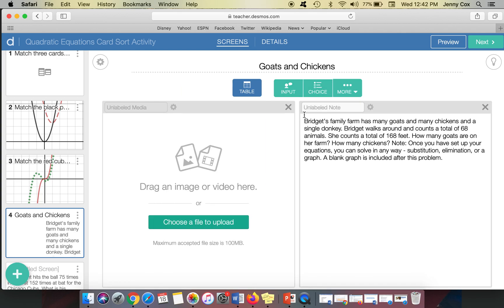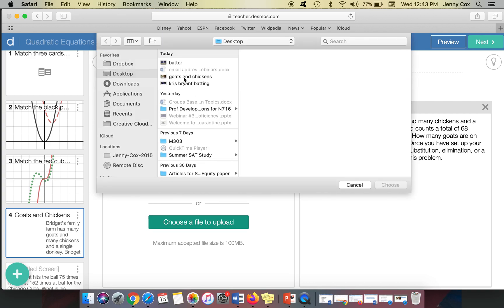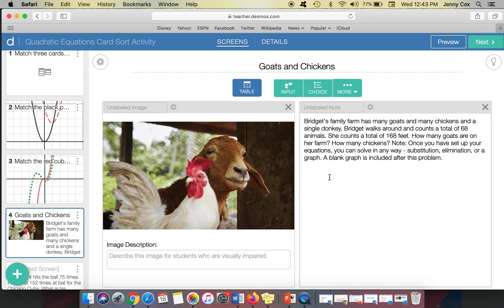So with that, I would go to media and I would choose a file so I could just Google goats and chickens. So I already did that. And I'm going to choose this picture of a goat and a chicken and I add it into my problem.